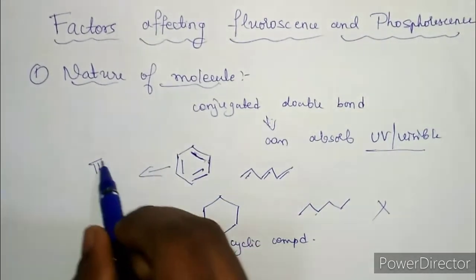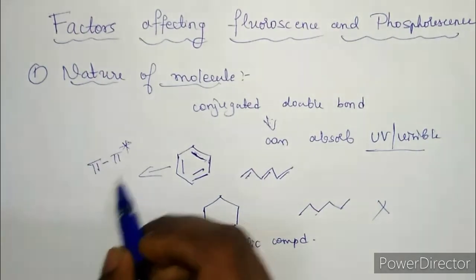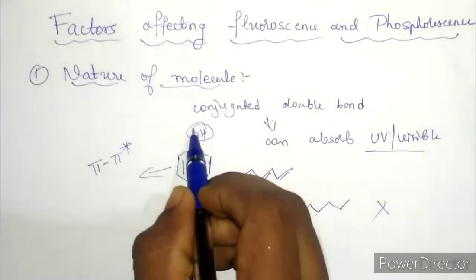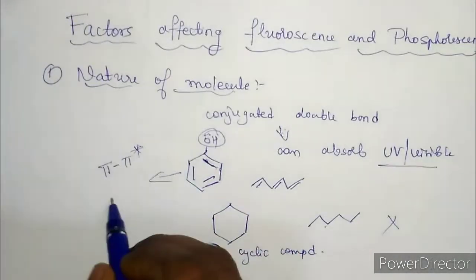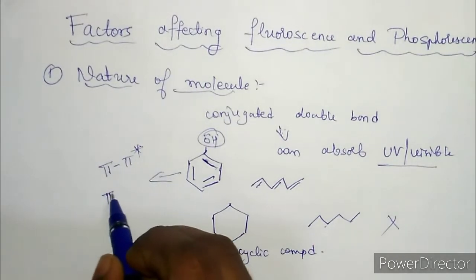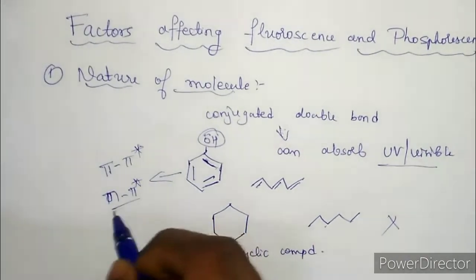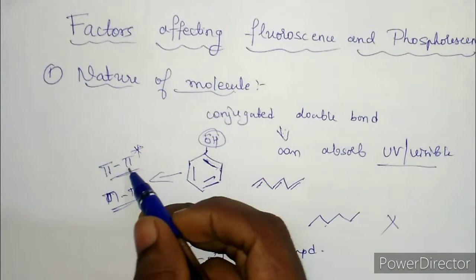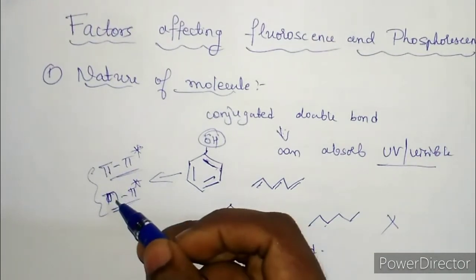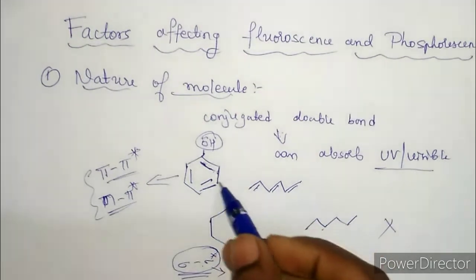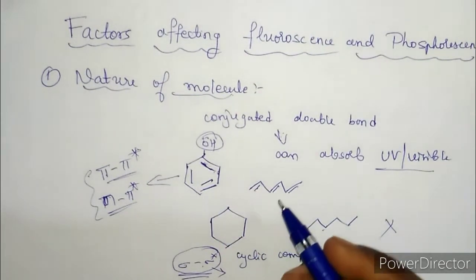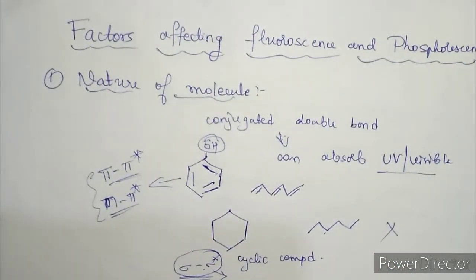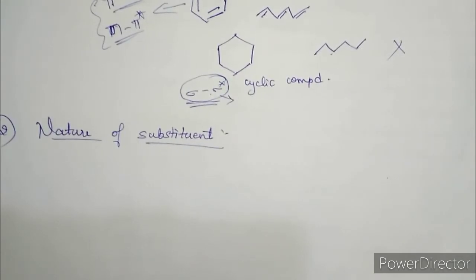In compounds with conjugated double bonds, the observed transition is usually pi to pi star. If there are groups with a lone pair of electrons, then n to pi star transition is also possible. For these two transitions the energy required is very less, hence these compounds can absorb UV or visible radiation very easily and show fluorescence and phosphorescence.